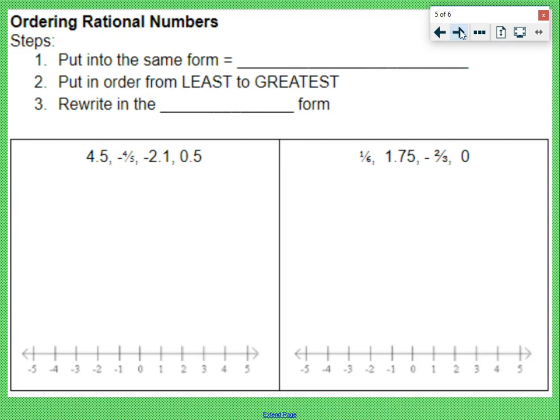Ordering rational numbers. There are some steps to order rational numbers. First, we want to put them in the same form. I like to use decimals. Put in order from least, smallest, to greatest. If we're working with negatives, negatives are always smaller than positives. And then you have to rewrite in the original form.